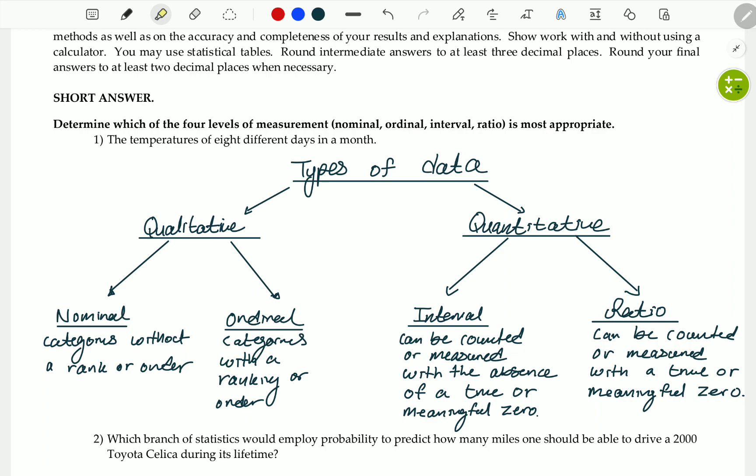The data is nominal if it's categories without a rank or an order. Categories can be such as eye color, your nationality, or your political affiliation. Those are categories without a rank and an order.